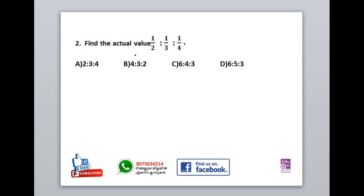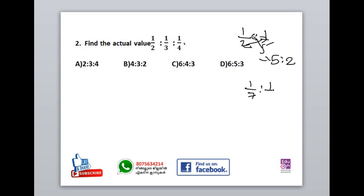Now, how do we talk about the same thing? If you talk about the same thing, you can see: 1 by 2 is to 1 by 5 is to 1 by 5. 1 by 5 is to 1 by 5. 1 by 5 is to 1 by 6 is to 1 by 6 and 8. Then you can see the answer from 8 is to 7. This is not the answer.